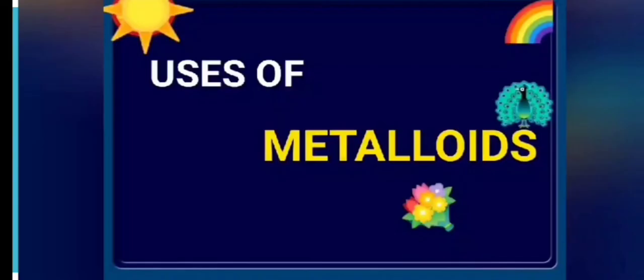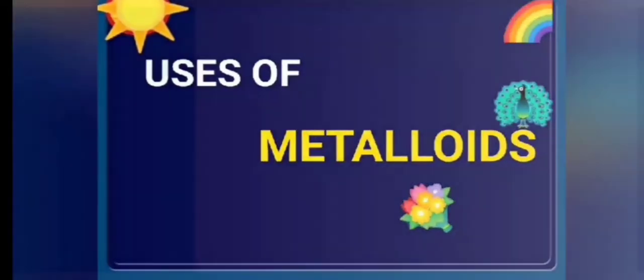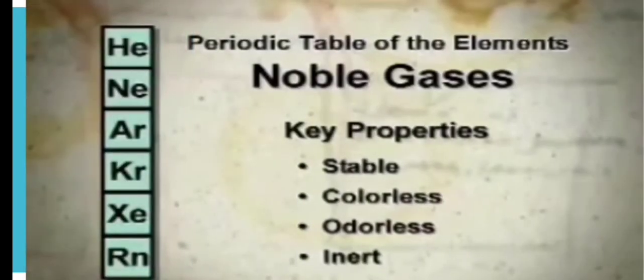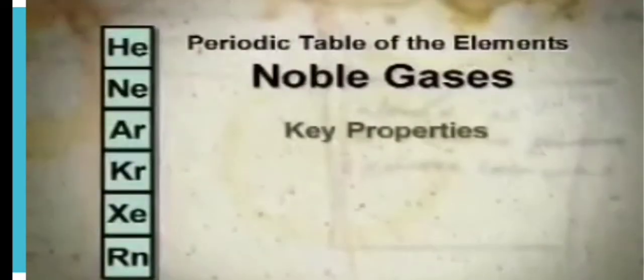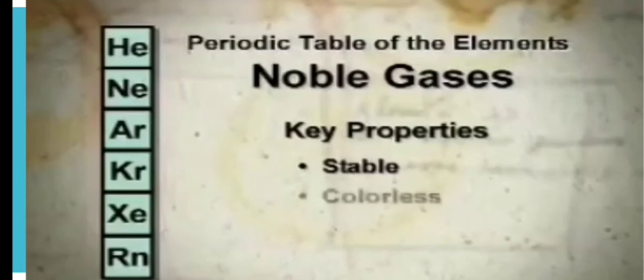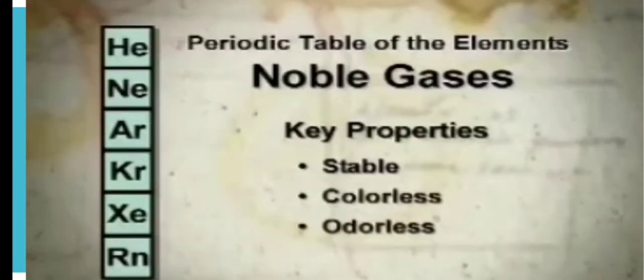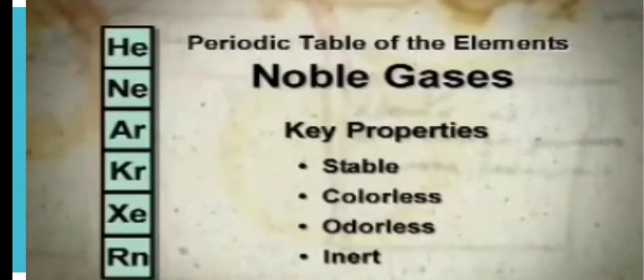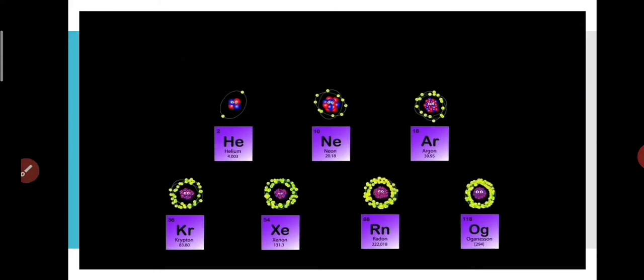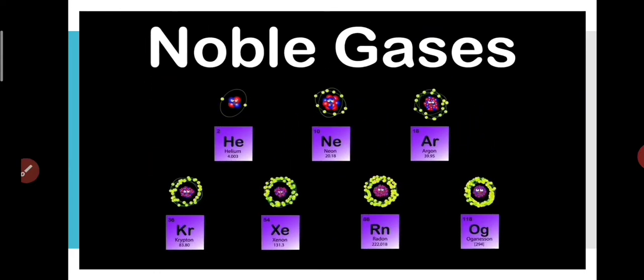Next, we will read about noble gases. The noble gases are the most stable group of elements. They are colorless and odorless. They are also inert in nature which means they do not readily react with other elements. These are the elements in periodic table who are known as the noble gases.